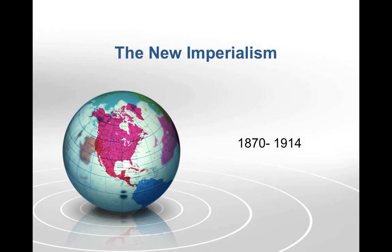We are going to be learning about the new imperialism, which entails European countries going to take over parts of Africa and also parts of Asia. We'll go into more specific examples of those different types of imperialism in history. Our time frame is 1870 to 1914, still in that same period working towards World War I.